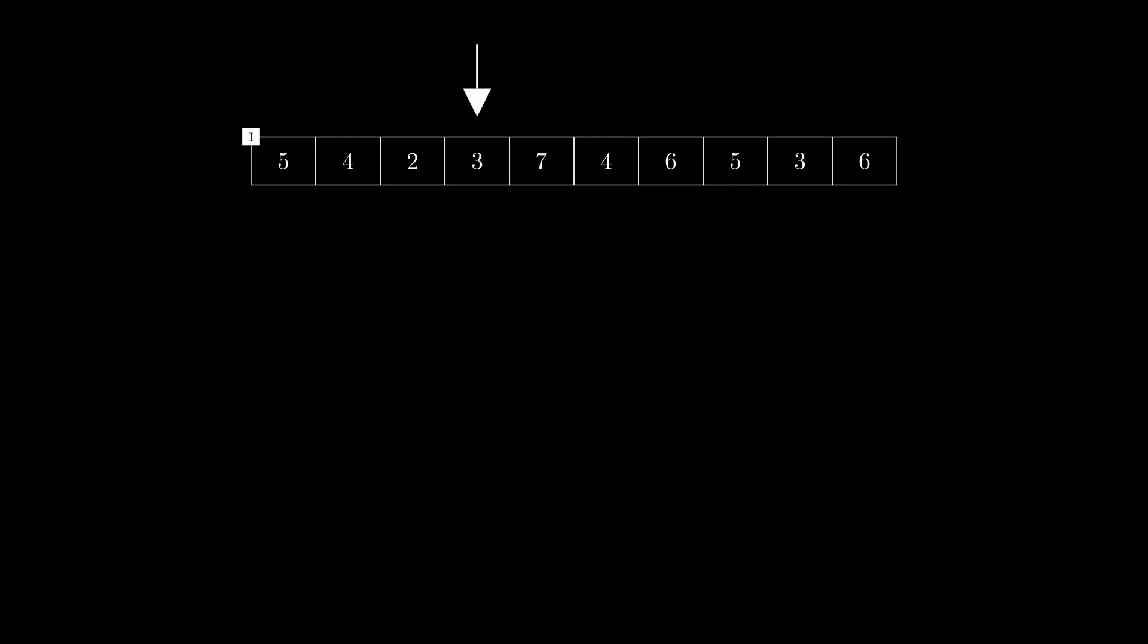This so-called smoothing is typically done by taking the local average around each pixel. As an example, let's try to average around the fourth entry, the place where you see the arrow, and we will put the result of that averaging in another vector that I have labeled as J.